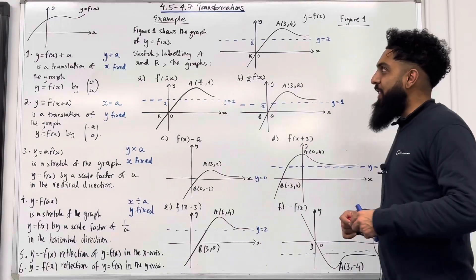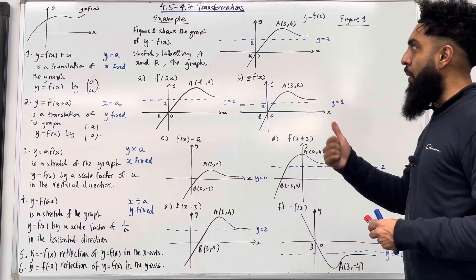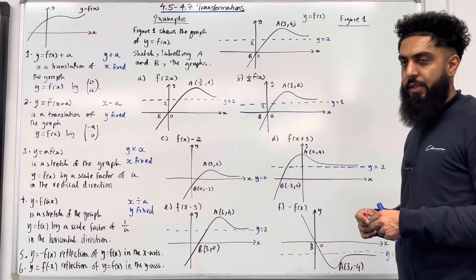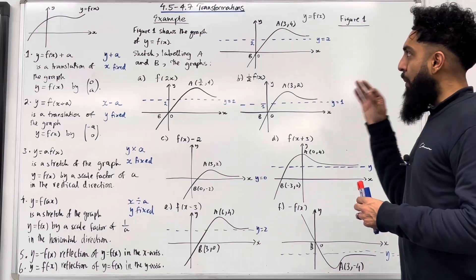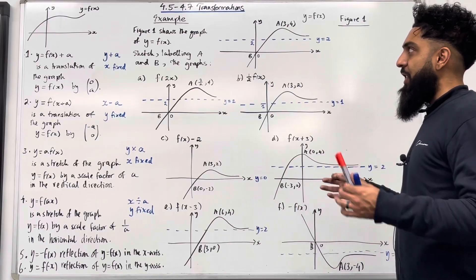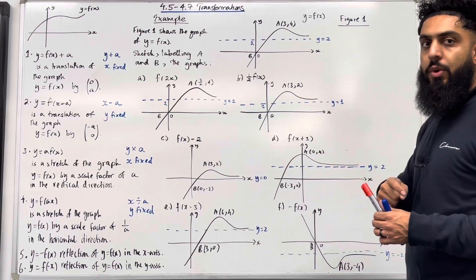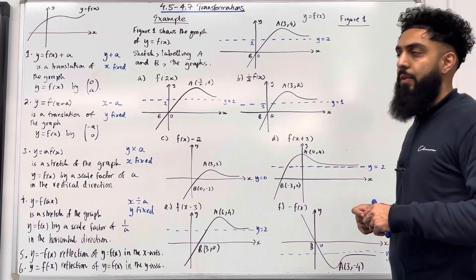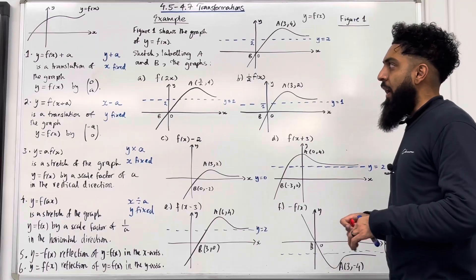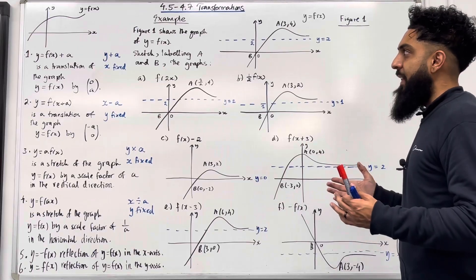Welcome back. In this teaching video, I'll be looking at 4.5 to 4.7 transformations. These sections are from Chapter 4 in the Pearson A-Level Year 1 textbook. Let's go through the key facts.